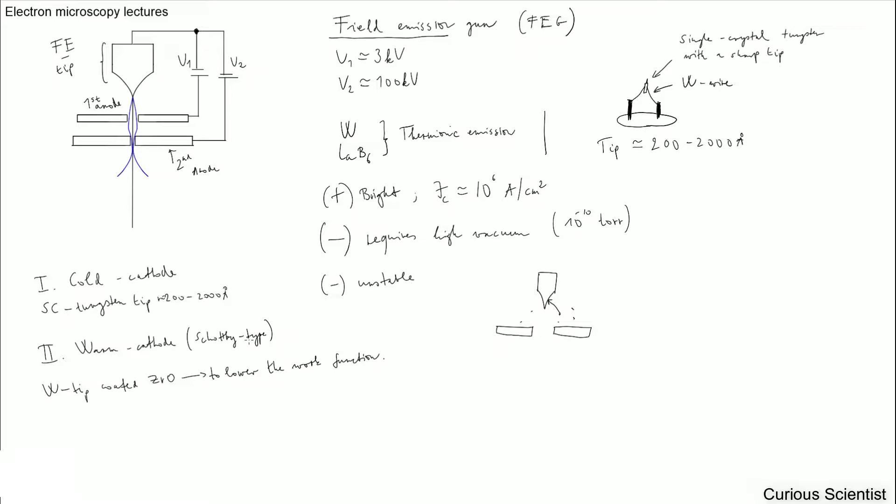So this is all basically about the field emission gun. So this is the third and basically the most popular type. It's used almost everywhere. At least those laboratories I know about, they all use scanning electron microscopes with field emission gun.